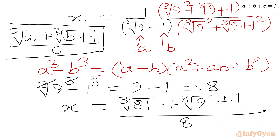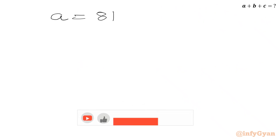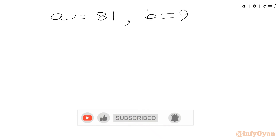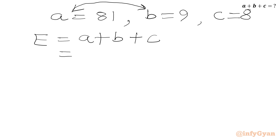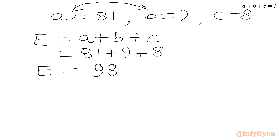Now we compare ∛a + ∛b + 1 over c with x = (∛81 + ∛9 + 1)/8. So a = 81, b = 9, and c = 8. Note we can also switch the values of a and b. Therefore a + b + c = 81 + 9 + 8 = 90 + 8 = 98. Our answer is a + b + c = 98. I hope friends you will like this video.